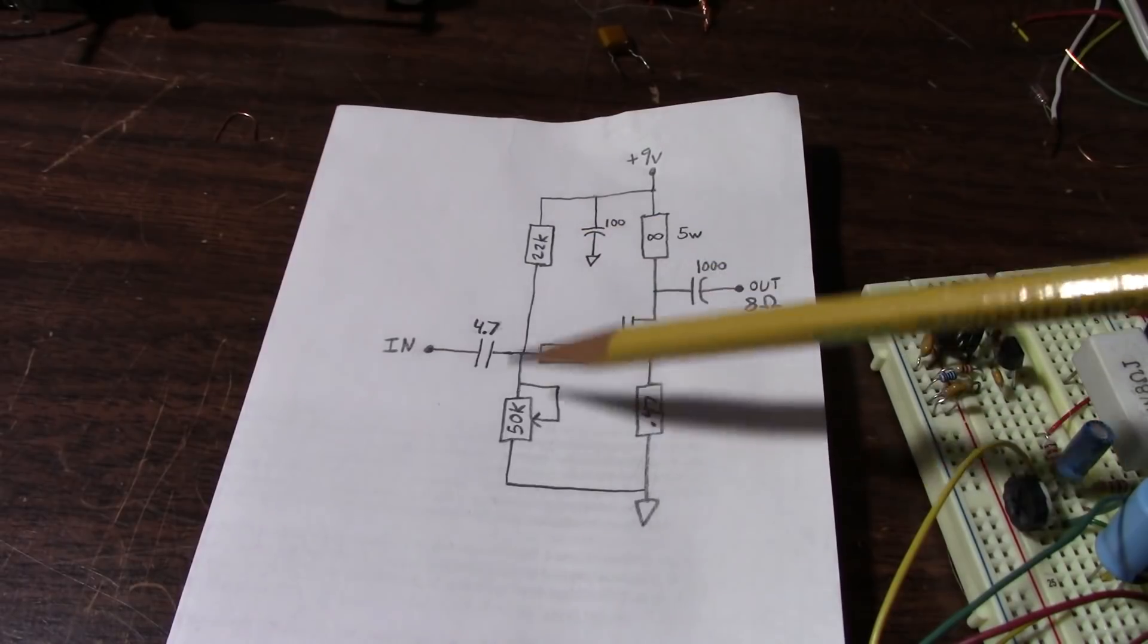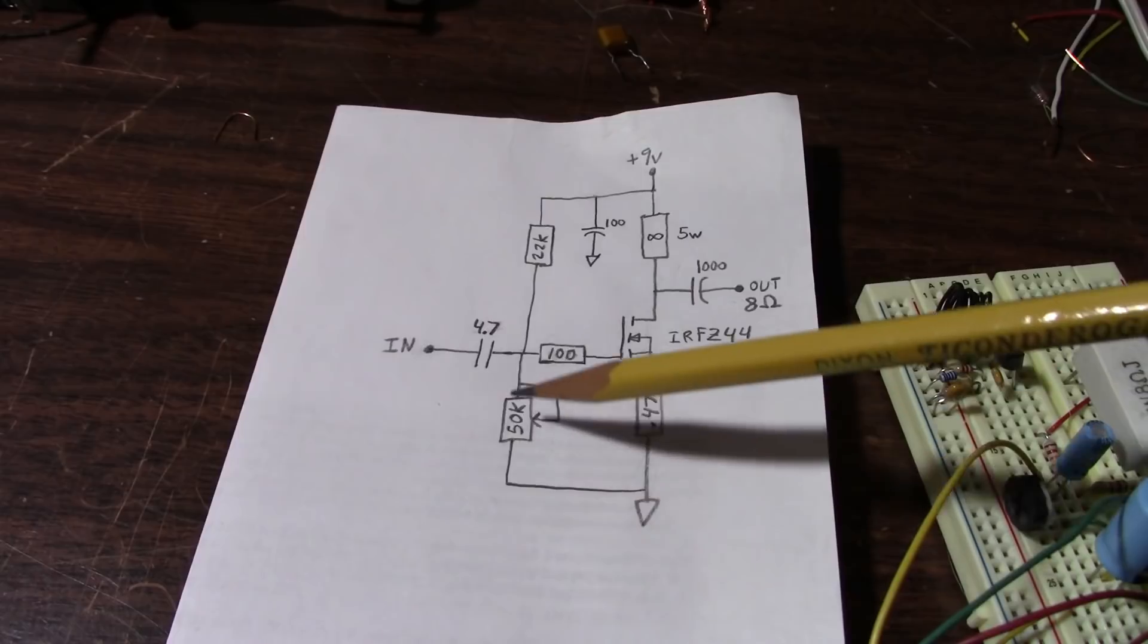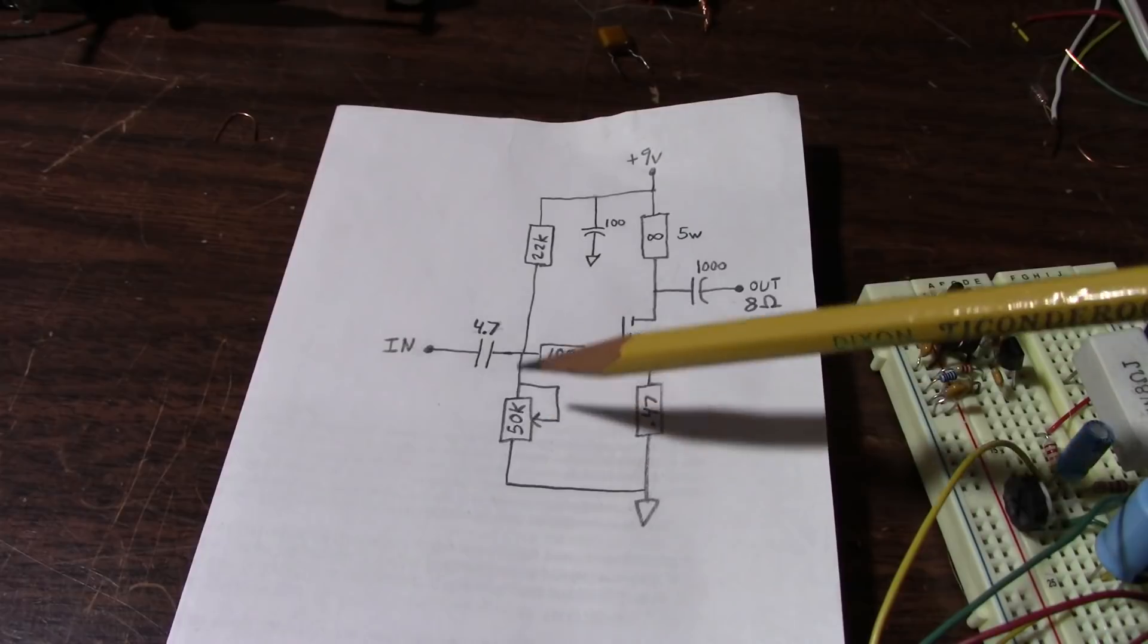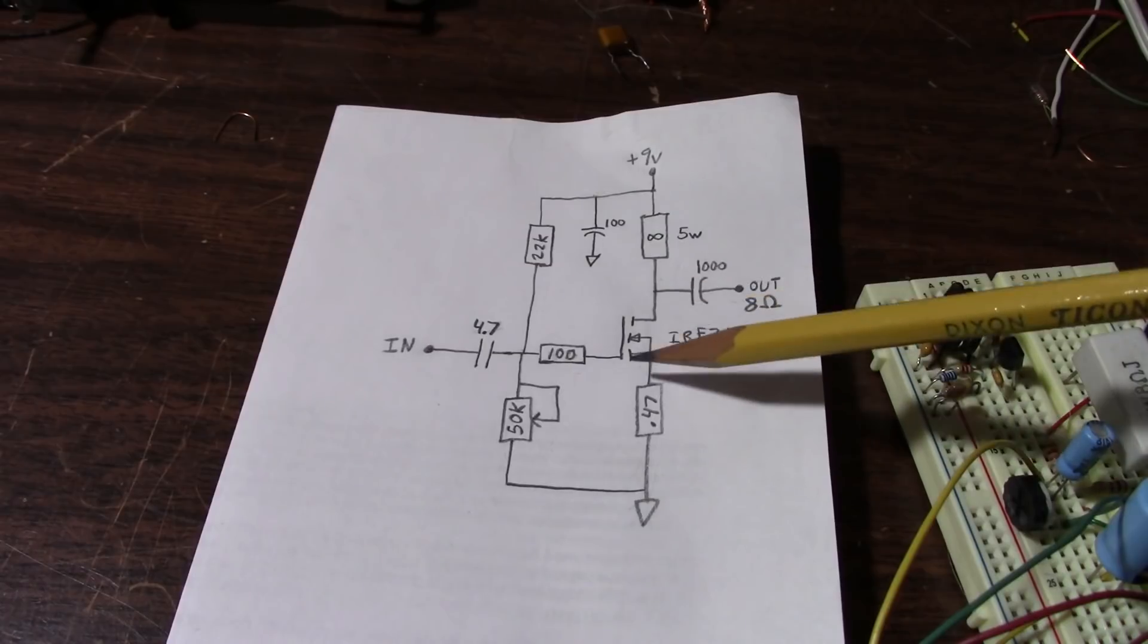Here on the input side, or the gate side, there's a voltage divider network. And this sets the operating point. So there's a trimmer here, and we adjust that to set the operating point. And I'll talk about how to actually do that later in the video.